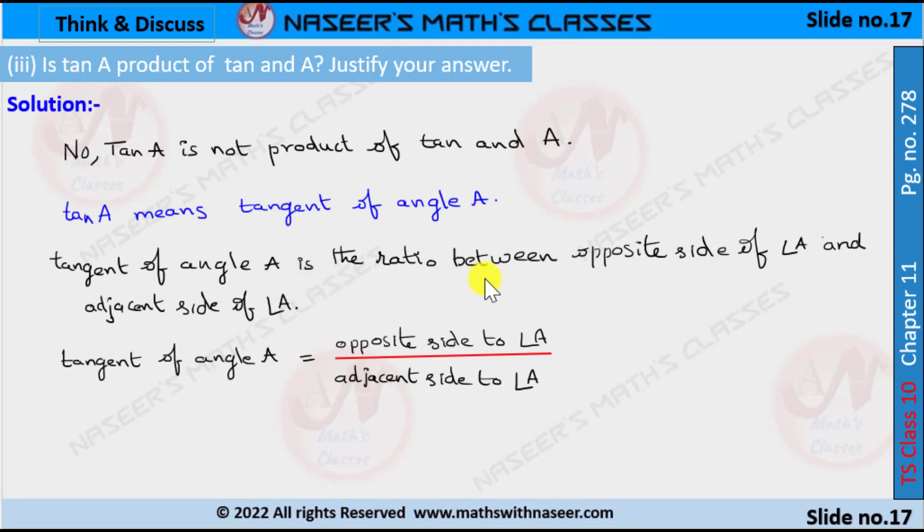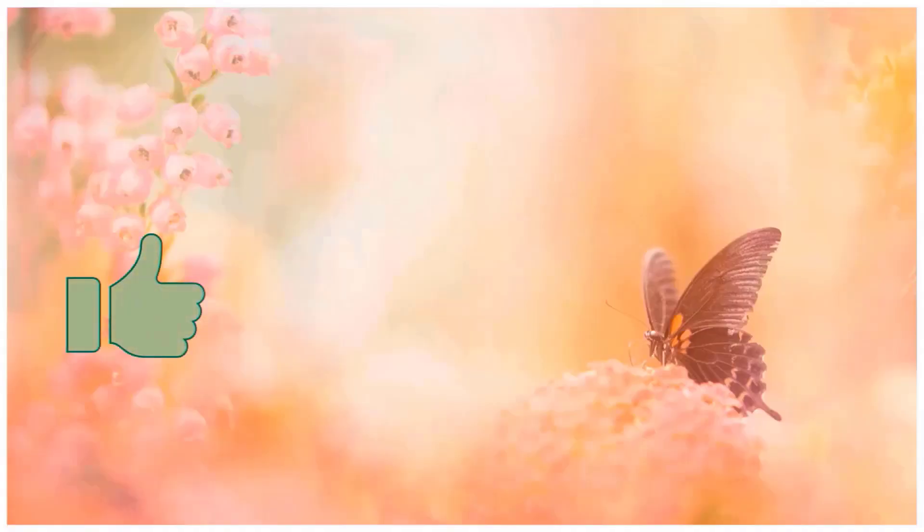Tangent of angle A is the ratio between the opposite side to angle A and adjacent side to angle A. Therefore, tangent of angle A is defined as the ratio between opposite side to angle A by adjacent side to angle A.